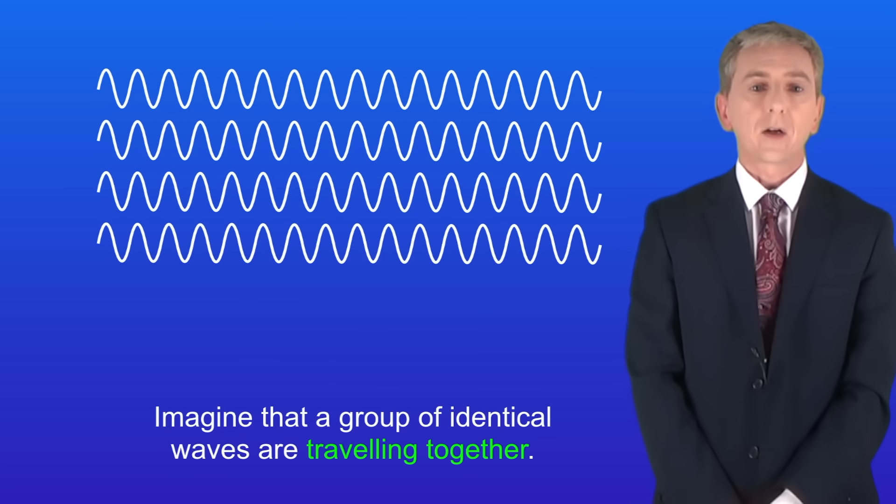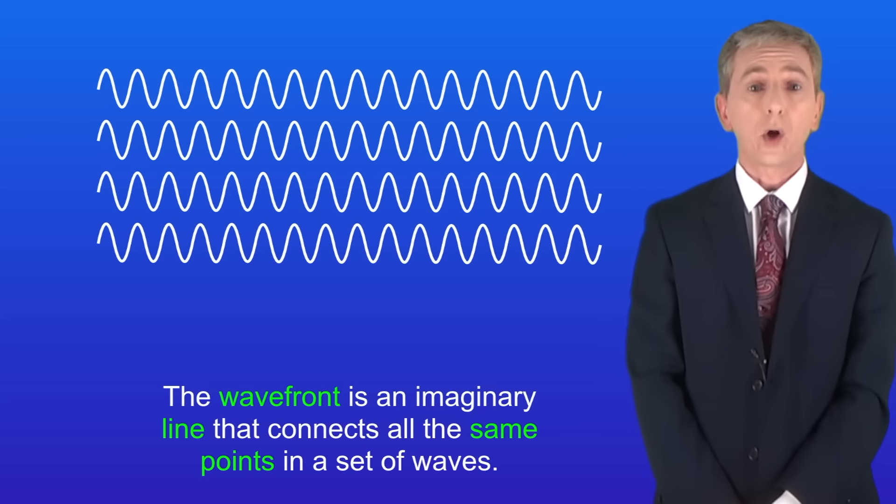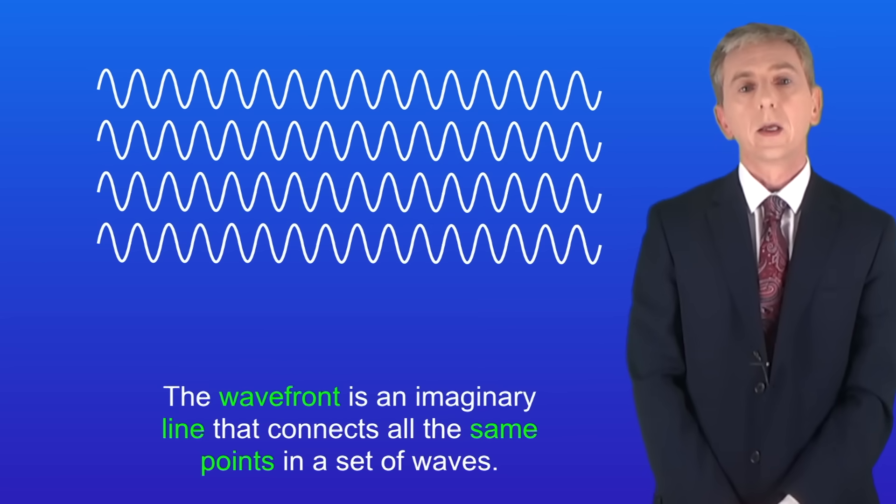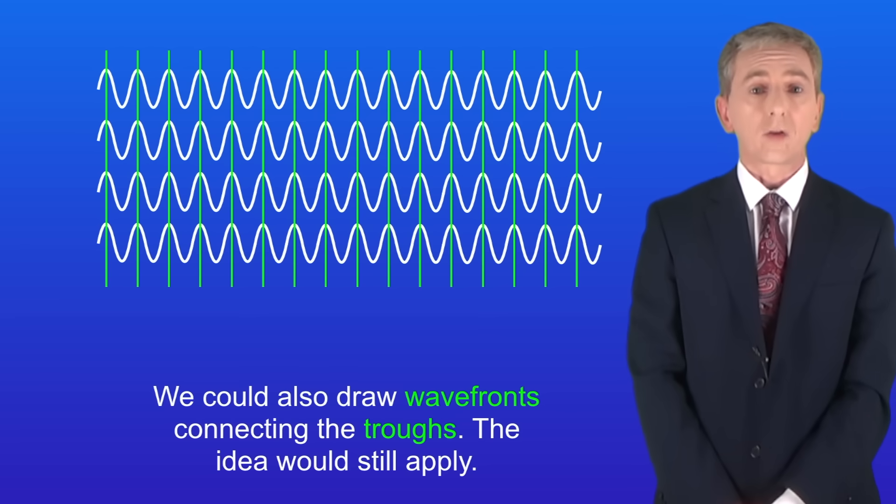Imagine that a group of identical waves are traveling together like this. I've shown transverse waves but this also applies to longitudinal waves. The wavefront is an imaginary line that connects all the same points in a set of waves. So here I'm showing the wavefronts connecting the peaks of each wave. However we could also draw wavefronts connecting the troughs and the idea would still apply.